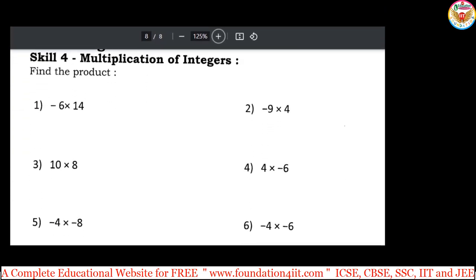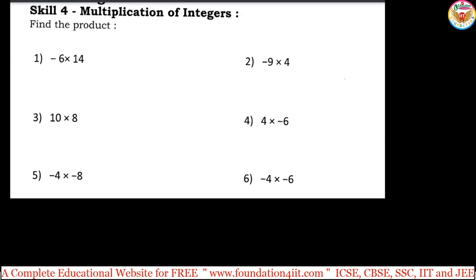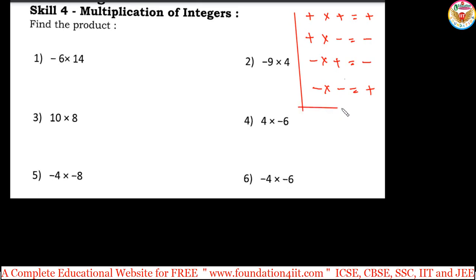Now, about multiplication of integers — I am giving one page on this. As you know: plus multiplied by plus gives positive, plus multiplied by minus gives minus, minus multiplied by plus gives minus, and minus multiplied by minus gives plus. Whenever you multiply integers, first determine the sign, then multiply the numbers. For the first problem: minus 6 into plus 14 — minus into plus is minus, so now just multiply 6 into 14.